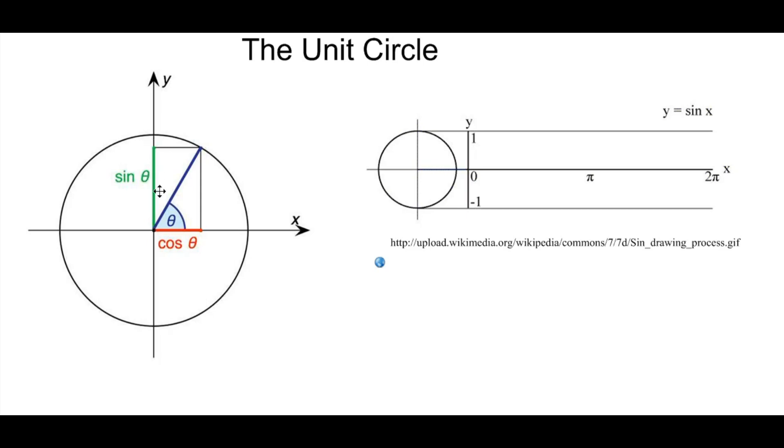And sine of theta would be the vertical length of your triangles on this circle. So, for example, here we have some angle theta, and we have a radius, which is 1, going to the edge of our unit circle.